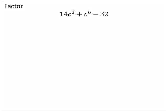So this one's just a tiny bit tricky because that c to the power of 6 is not where it should be, technically. And so we just need to rearrange this so that we got c to the power of 6 plus 14c cubed minus 32.